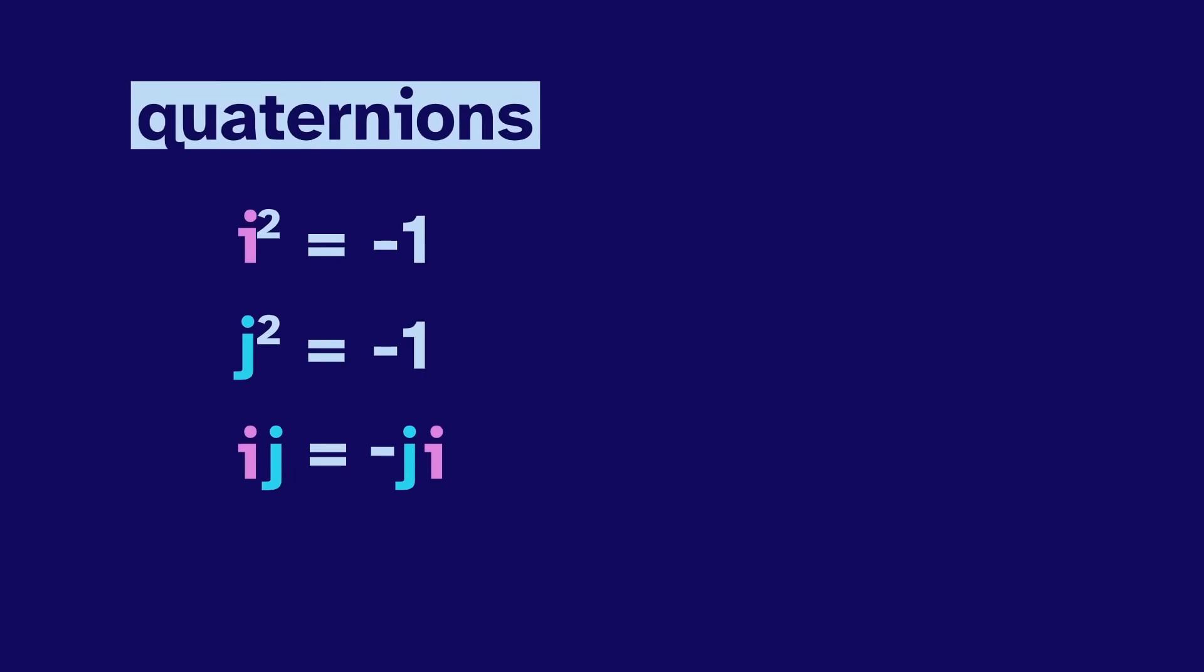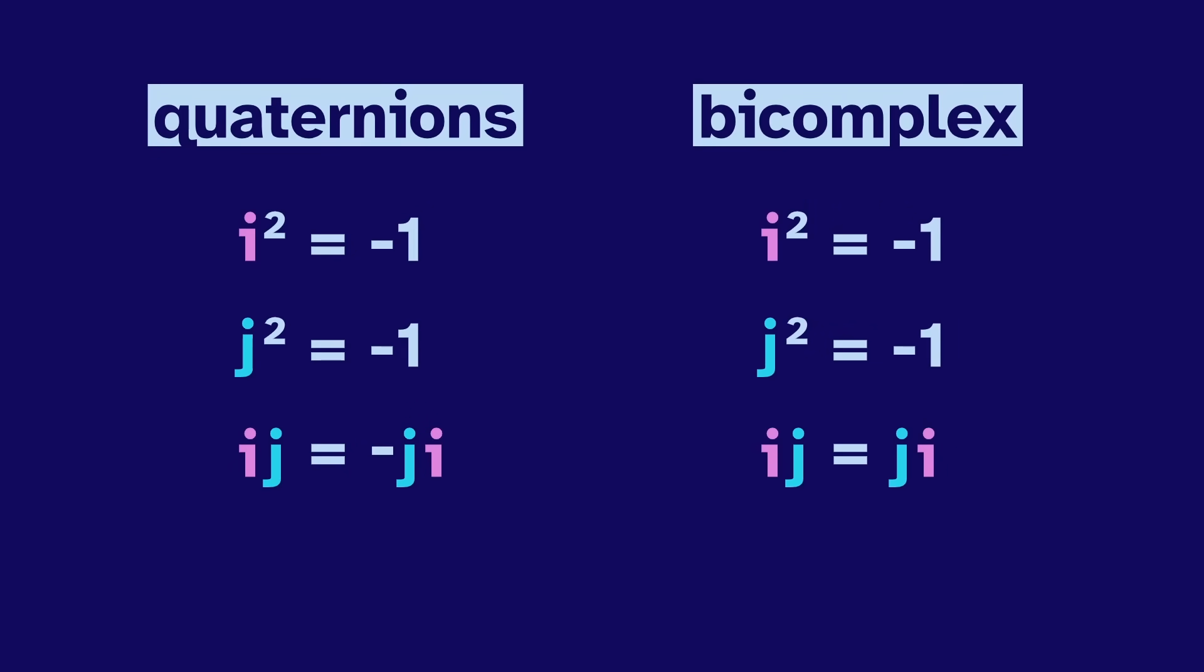This is why the quaternions are generally more useful than the bi-complex numbers, a system where i and j commute. And speaking of these, it would be fun to see them graphed in this way. But that'll have to wait for a future video.